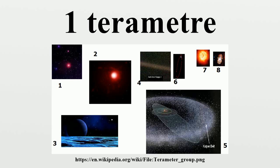2.9 terameters, 19.4 astronomical units — distance between Uranus and the Sun. 4.4 terameters, 29.4 astronomical units — perihelion distance of Pluto. 4.5 terameters, 30.1 astronomical units — distance between Neptune and the Sun. 4.5 terameters, 30.1 astronomical units — inner radius of the Kuiper Belt.